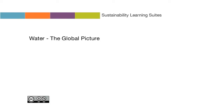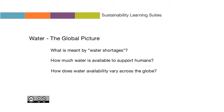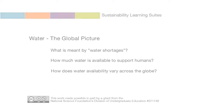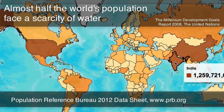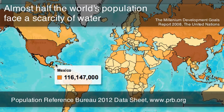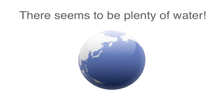Introduction to water: what is meant by water shortages, how much water is available to support humans, and how does water availability vary across the globe? We'll look at these questions in this video. About half the world's population faces a scarcity of water — this is about three billion people. On such a large planet with so much water, how is this possible?